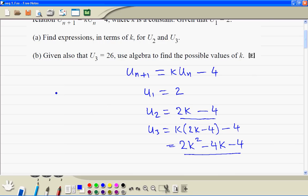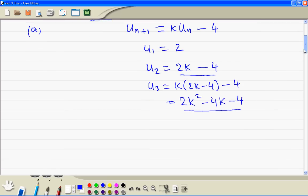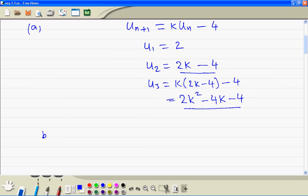So this is the answer to part a. Part b, we know the third term is equal to 26. So we write 2k squared minus 4k minus 4 is equal to 26. Then we bring 26 to the left hand side. So that gives us minus 30.